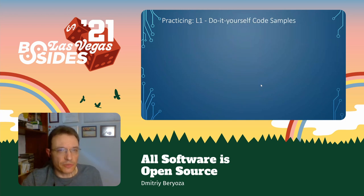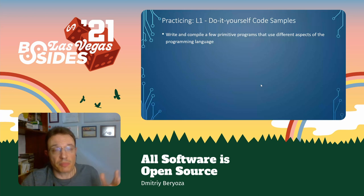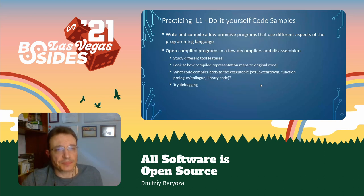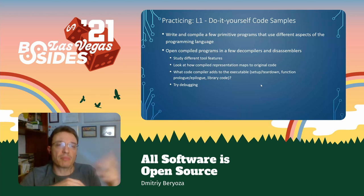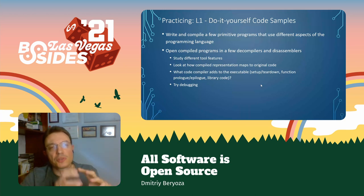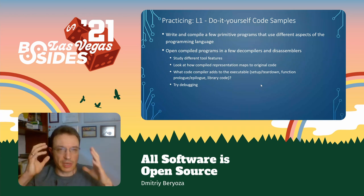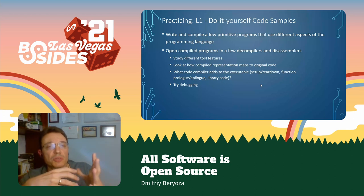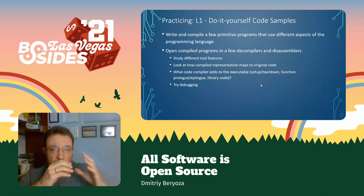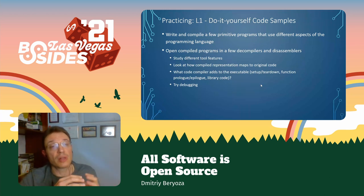You can start by doing do-it-yourself code samples. The reason I propose that is so you can write really, really simple programs — programs that try different features of the programming language — and then compile them and try them in different decompilers and disassemblers. That way you're starting slow with very simple stuff and learning tools at the same time. You don't go full hog on a really complex application. And as part of that, you can look at how the compiler produces the code — there's setup and teardown code added to the executable, function prologues and epilogues, library code.